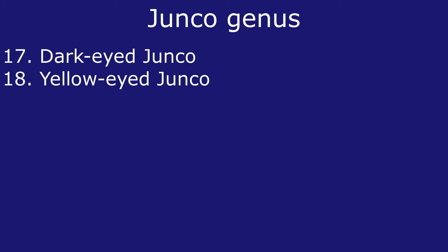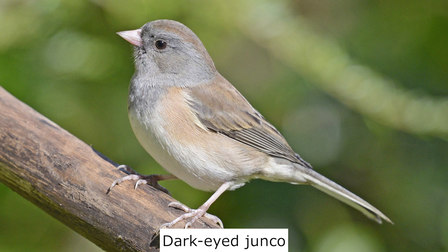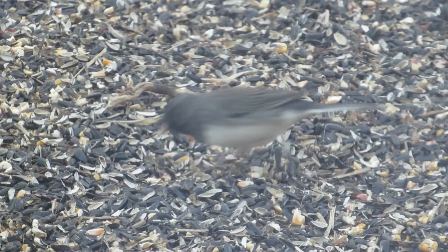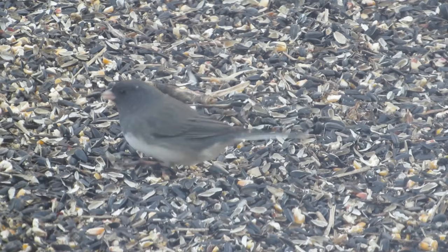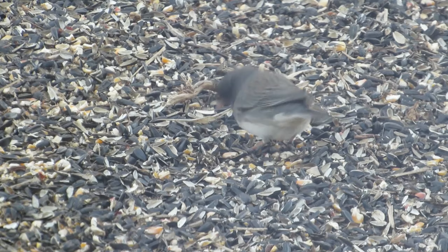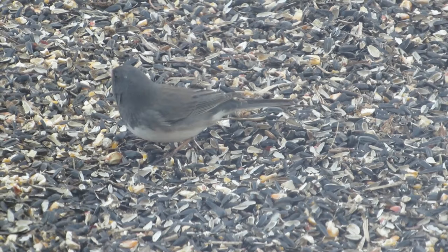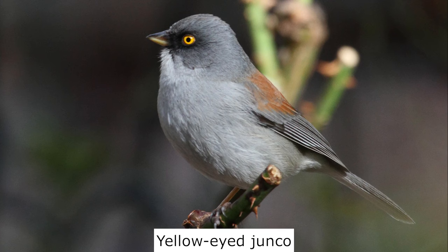The birds in this genus are unlikely to be confused with house sparrows. The dark-eyed junco is found across the United States and Canada, wintering in the United States and southern Canada. There are numerous races found in different areas, but none really resemble house sparrows. The bird is frequently caught in baited sparrow traps. The yellow-eyed junco is only found in extreme southern Arizona and New Mexico in pine and pine-oak forests.